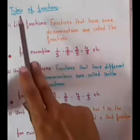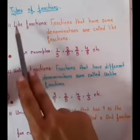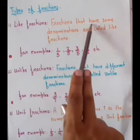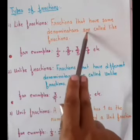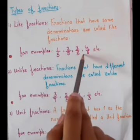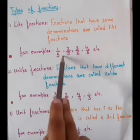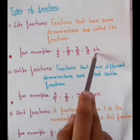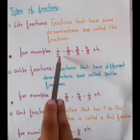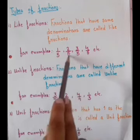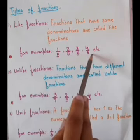Now next is your types of fractions. First is like fractions. Fractions that have the same denominators are called like fractions. For example: one upon five, two upon five, three upon five, and four upon five, etc. Here you can see all of them have five as the denominator, so all are said to be like fractions.